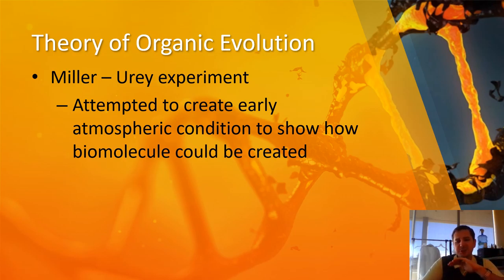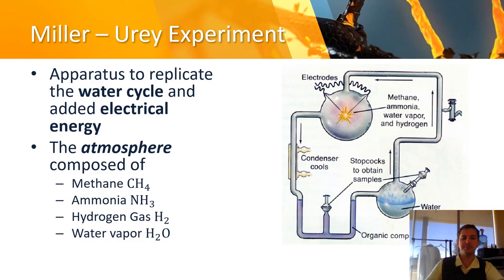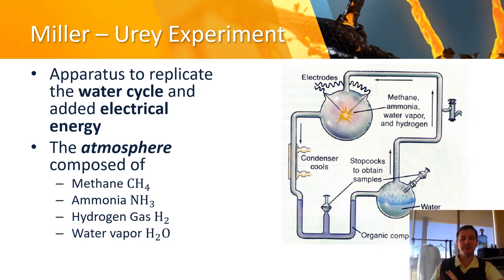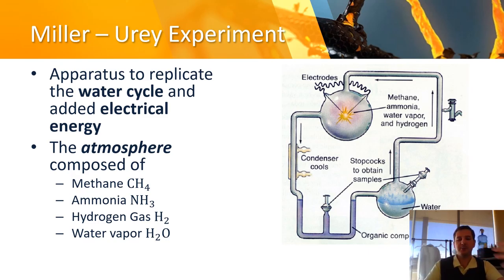We've gone from anatomical homologues to embryonic homologues, and now we're going to be covering molecular homologues — not just at the genetic level but at the biomolecule level. This is actually put forward as one of Haeckel's key points: that the first living thing has to come from what they call the primordial soup. So let's talk about the Miller-Urey experiment.